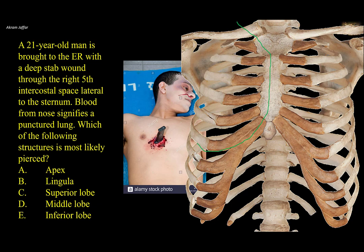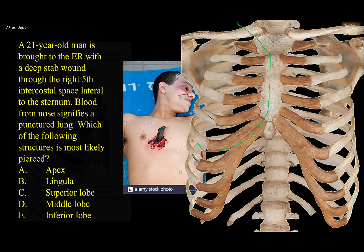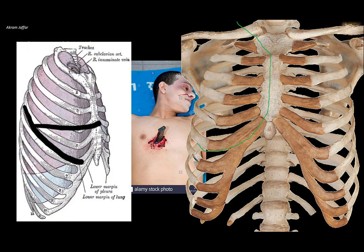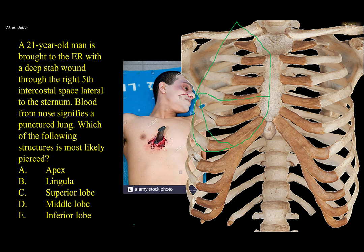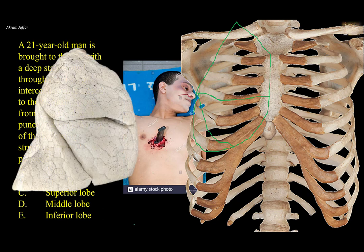Regarding the surface anatomy of the lobes of the right lung, the middle lobe extends from the anterior border at the level of the fourth costal cartilage, following the fourth rib until it intersects the oblique fissure. The oblique fissure intersects the inferior border of the lung at the level of the sixth costal cartilage joint, then follows the sixth rib and intersects the horizontal fissure. This is the surface projection of the three-dimensional lung on the thoracic wall. The inferior lobe is not only inferior — most of it is located posteriorly, while anteriorly you have the upper and middle lobes mainly.